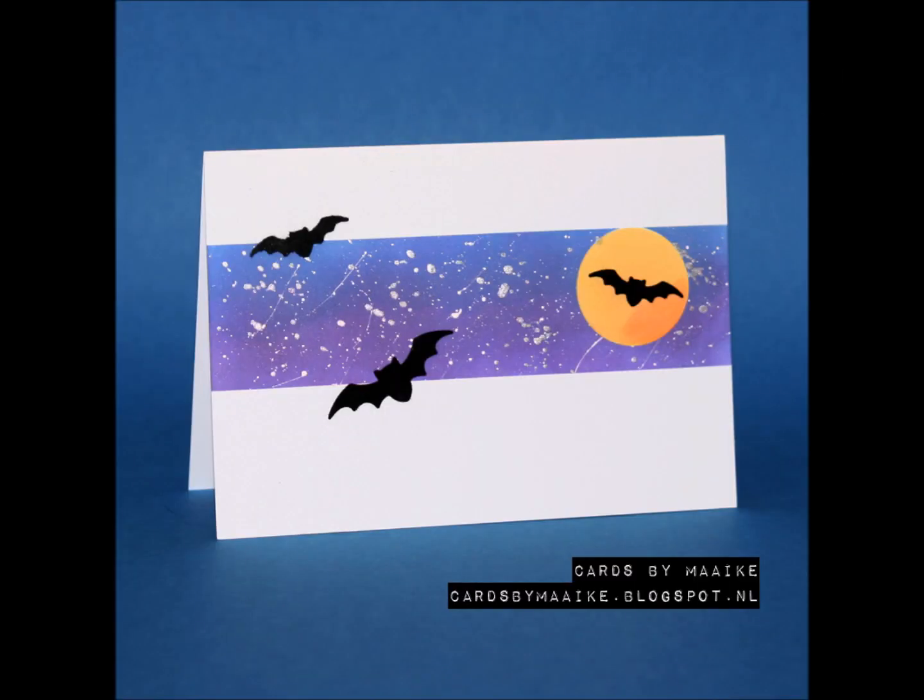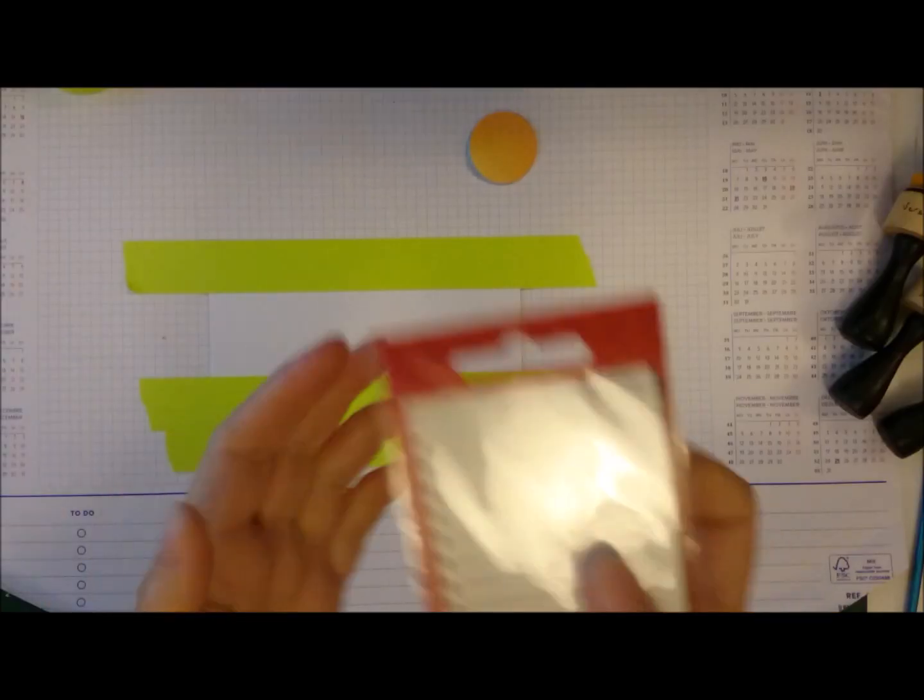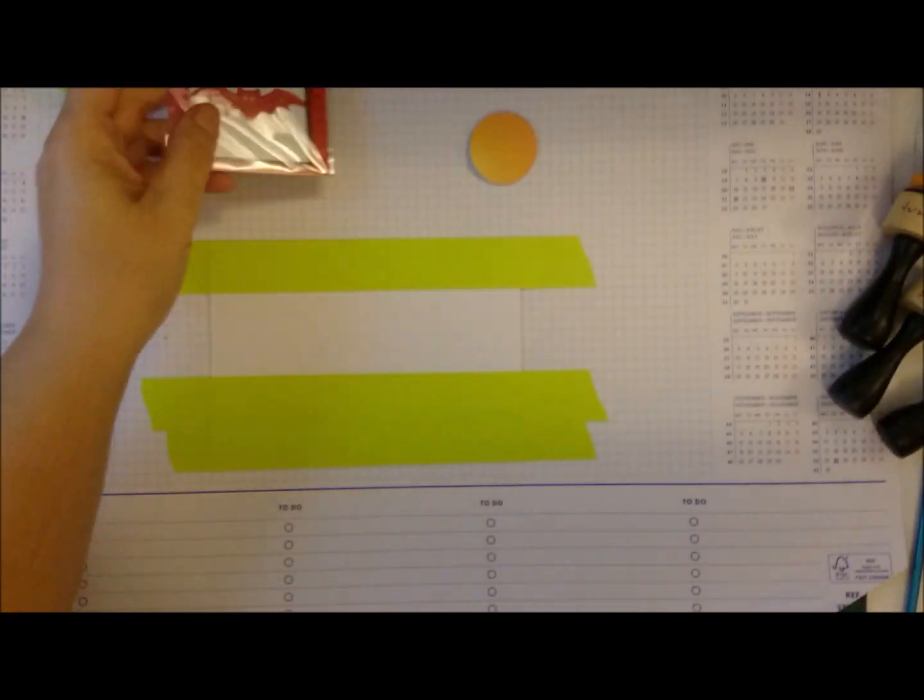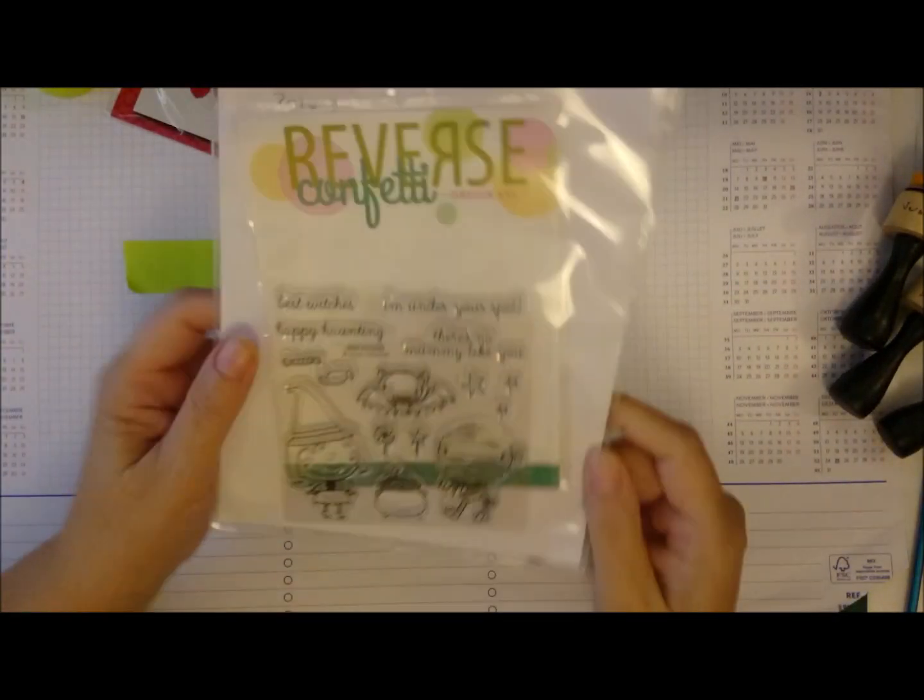Hi guys, it's Mike and today I'm back with a quick and easy Halloween card with bats. For the bats I use these really cheap dies, I think they were a dollar or less, 77 cents, something like that.